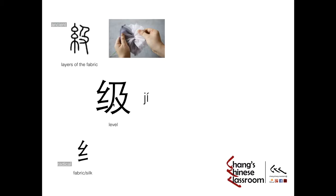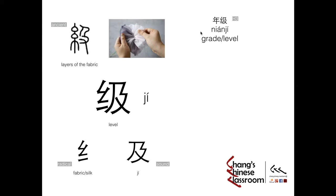The structure of this character is combined by the radical and the sound component. The left part is the radical, indicating this character has something to do with fabric or silk. And the right part — this same character — is Ji, representing the sound of the character. Exactly the same, which is not quite common, but it is the same for this one. The useful vocabulary we've already learned in HSK level 3: Nian Ji, for grade or level. Nian means year, and Ji means level — so which year's level? Grade.